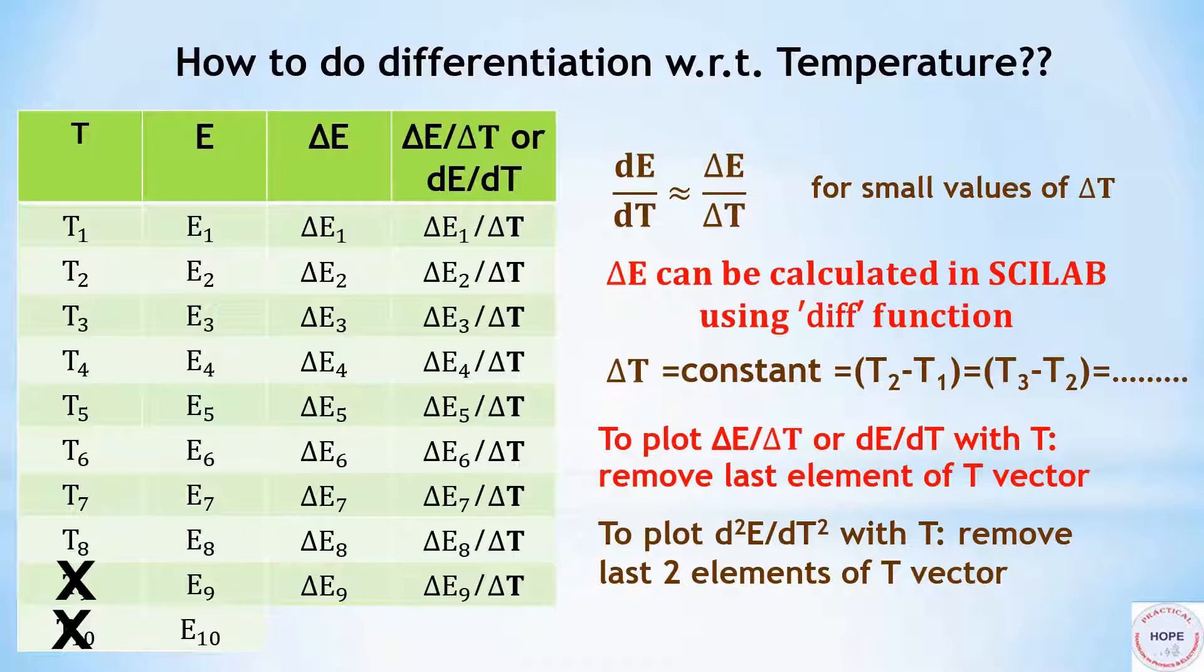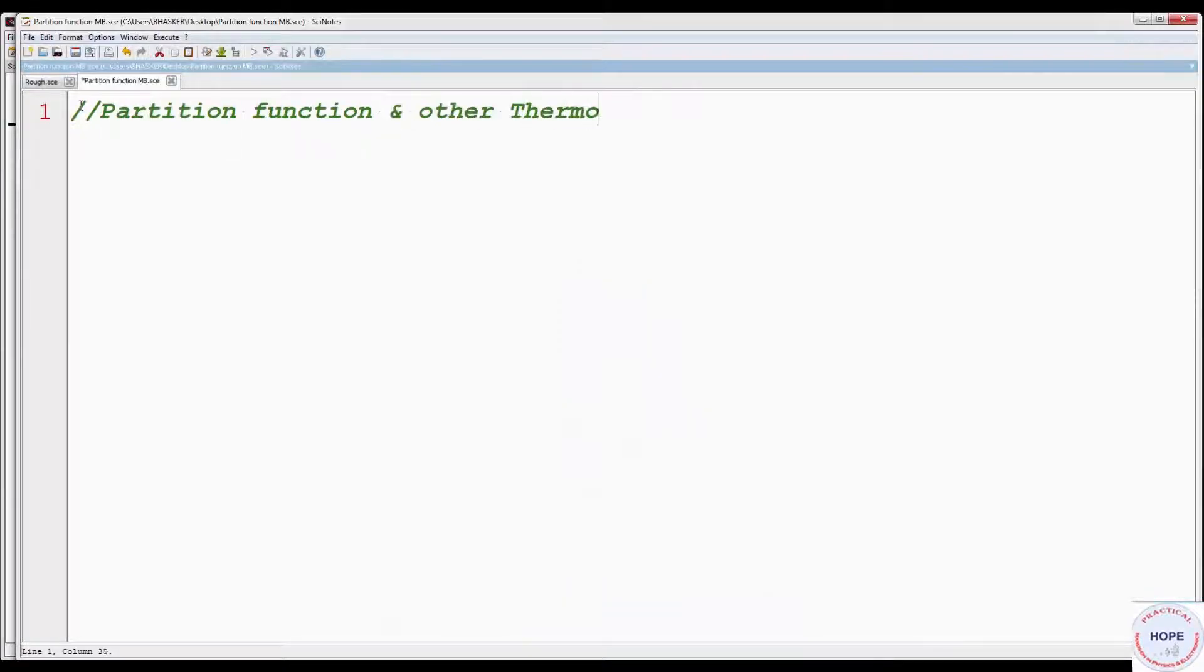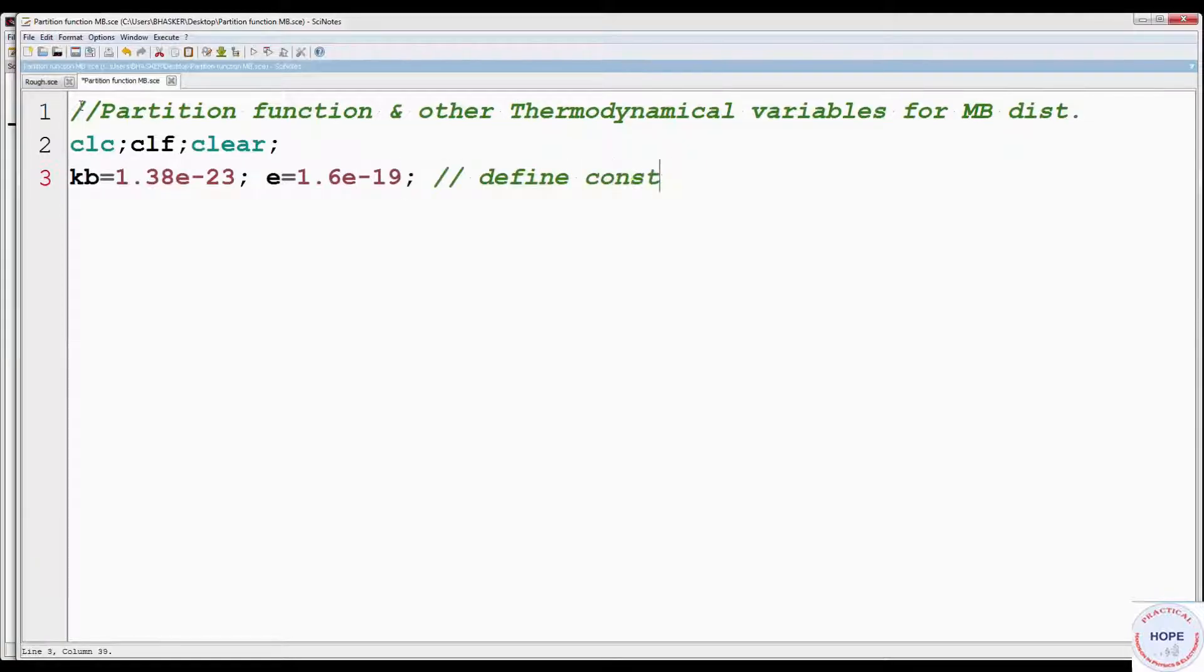Let's move on to the programming part now. First give a suitable title. CLC is to clear the console, CLF will clear or reset the graphic window, clear is to clear the variables in the workspace. Define constants: Boltzmann constant and charge of an electron. Then set the energy difference between levels to 0.01 electron volts.